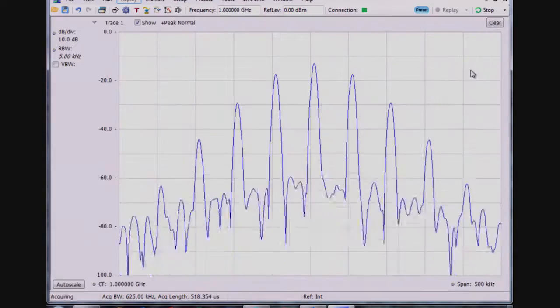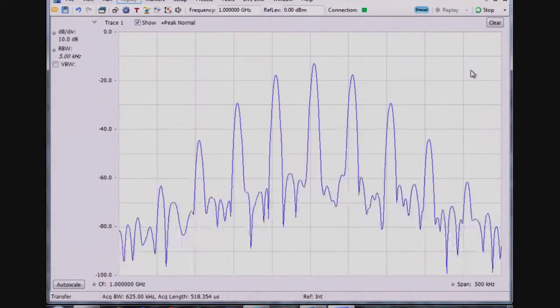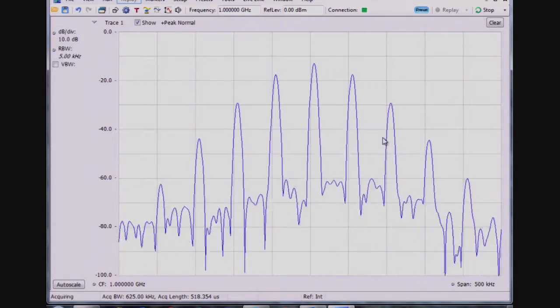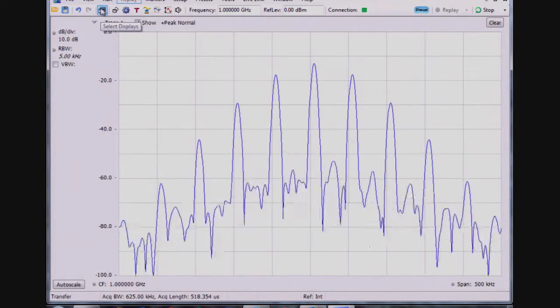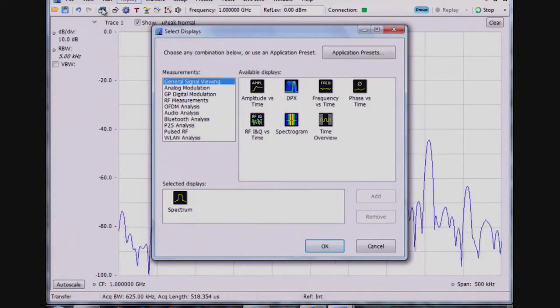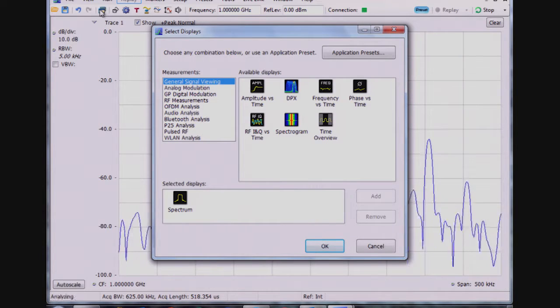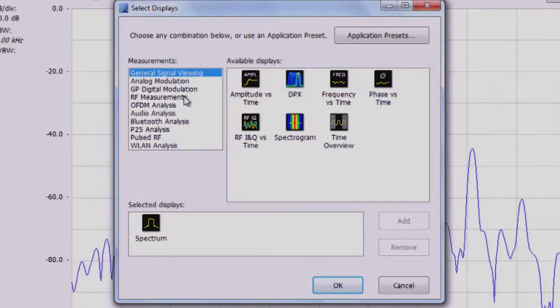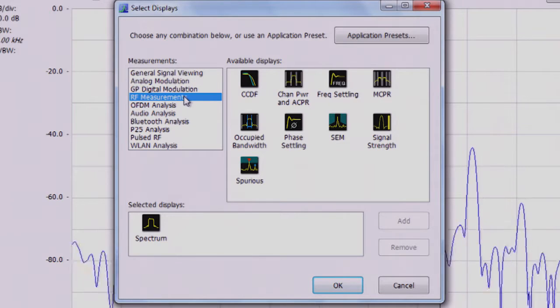So now I have the spectrum measurement again, and I want to show if I bring up an occupied bandwidth measurement. When I click the selected displays icon in the upper left hand corner, I have measurements organized into different folders.